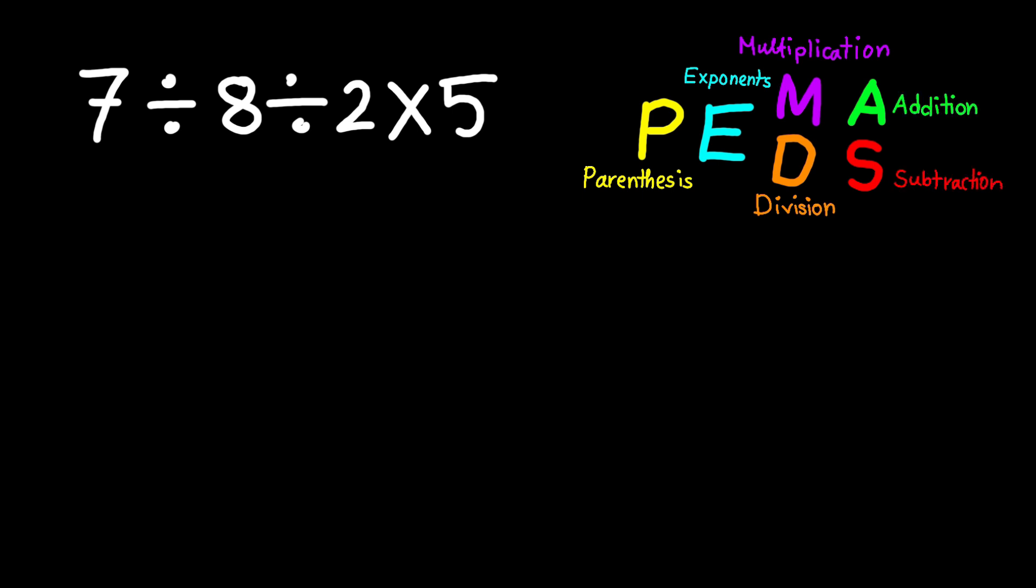We first do parentheses, then exponents, then multiplication and division from left to right, and finally addition and subtraction from left to right. Now multiplication and division are at the same priority level, so we just go left to right, same for addition and subtraction.